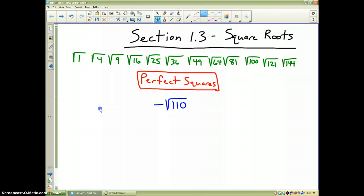So we're going to approach this the same way. The square root of 110, that lies somewhere in between those two square roots. So I'm going to write out here negative the square root of 100, and I'm going to write negative the square root of 121.